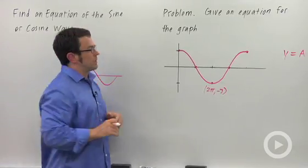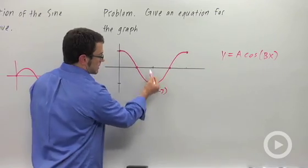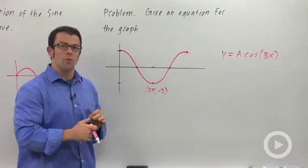So the question is what's a and what's b? Well this is really our only clue. We have 2 pi as the x value of this point and negative 3 as the y value.